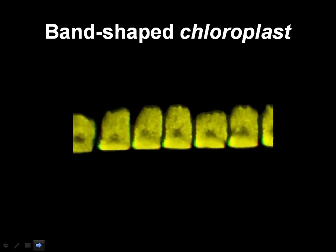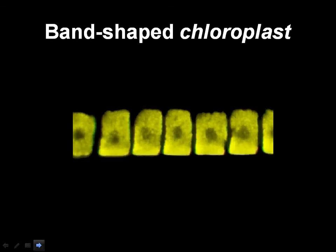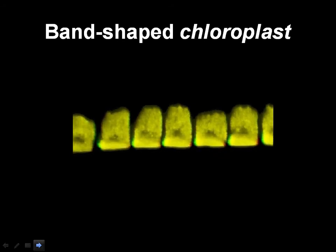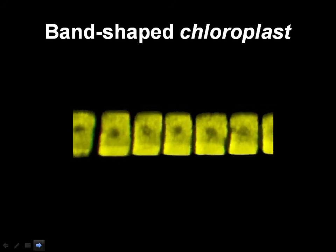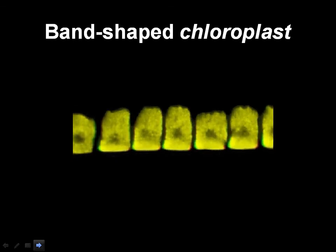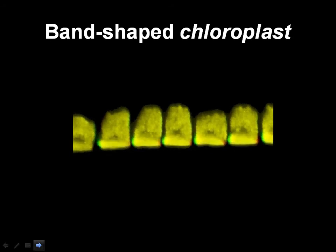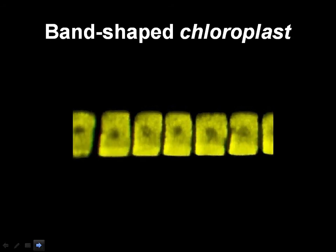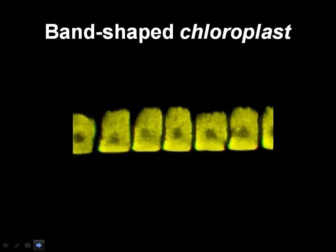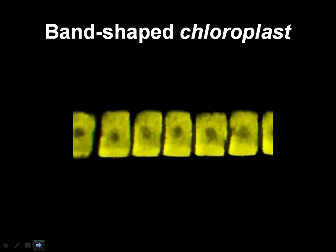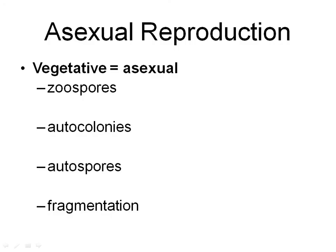Here's a band-shaped chloroplast. The band is like a women's bracelet going around the arm — each of those cells has one band-shaped chloroplast. That's one whole chloroplast that has that shape. That's why the question is there — in some cases we have chloroplasts that are really unusually structured.